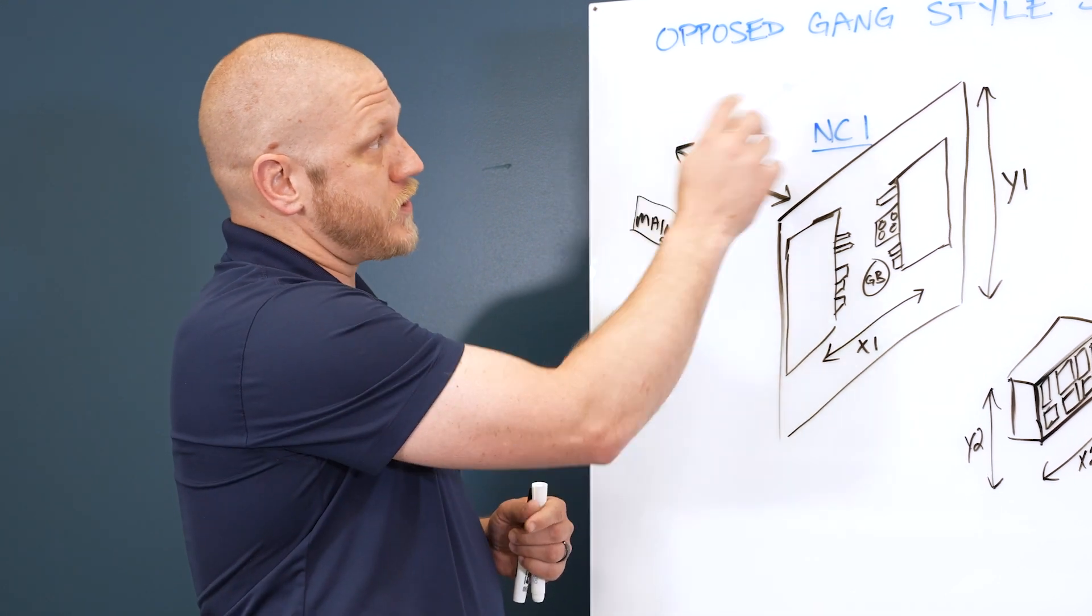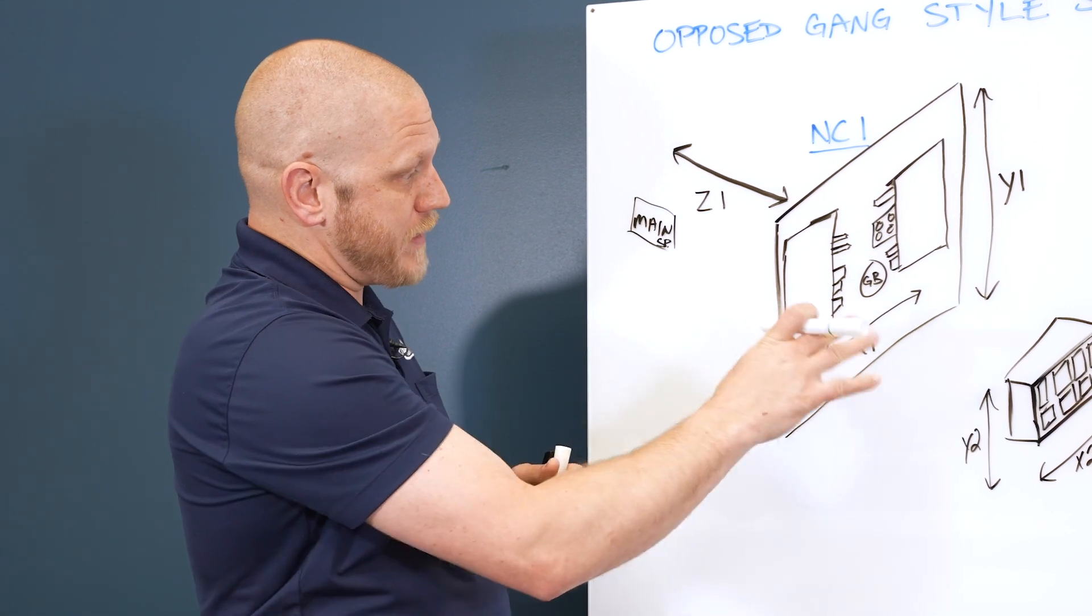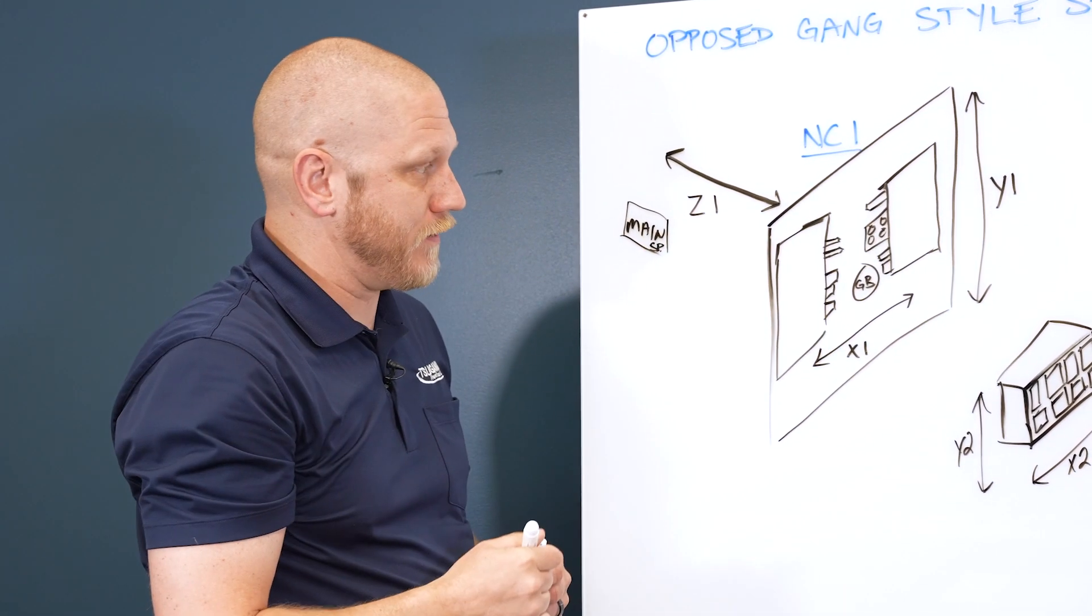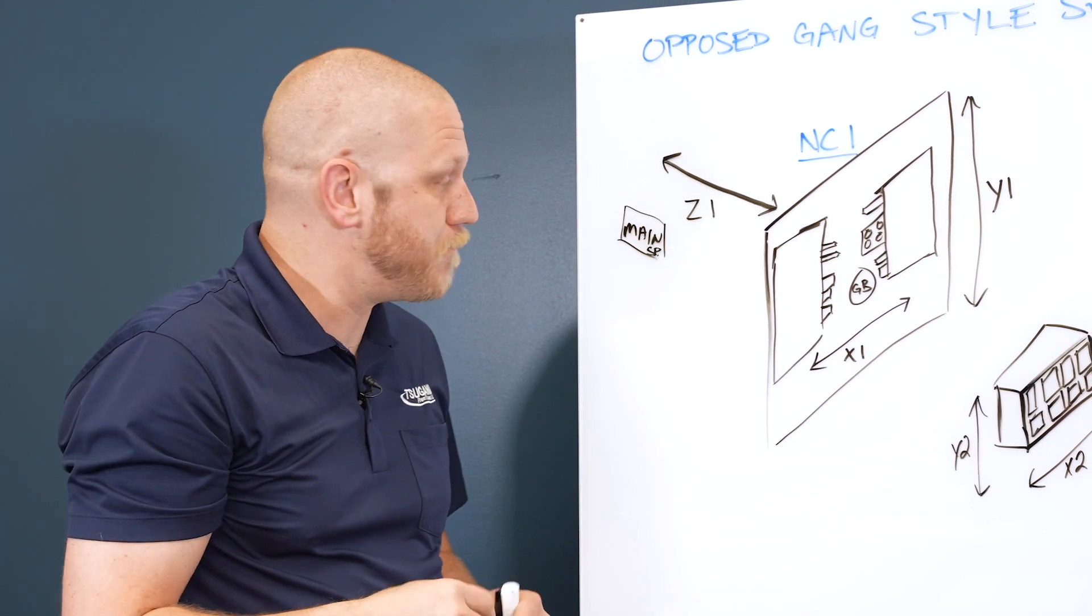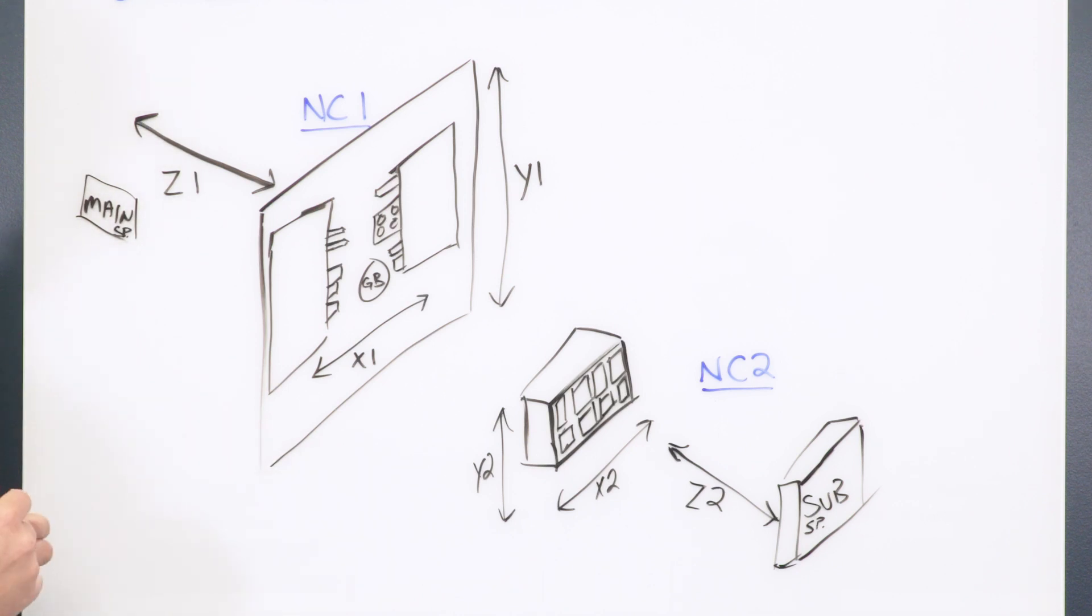Now some machines are not opposed gang style. They may be a vertical gang style, and that would basically take this coordinate system and turn it like this and eliminate this gang slide completely. We can go into that in a different video. So for opposed gang style Swiss, typically this is the way it's going to be laid out.